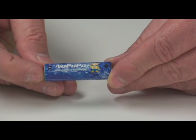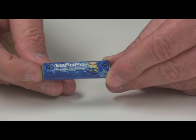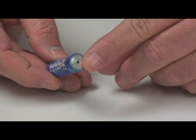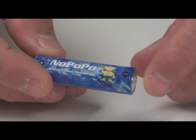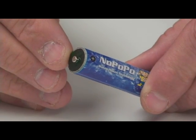It's called the NoPoPo, the Non Pollution Power battery. What makes this battery different than any batteries you've ever used before is on the bottom of the battery it has a small hole. Through this hole is where you put the liquid, water or any type of liquid, to activate it.